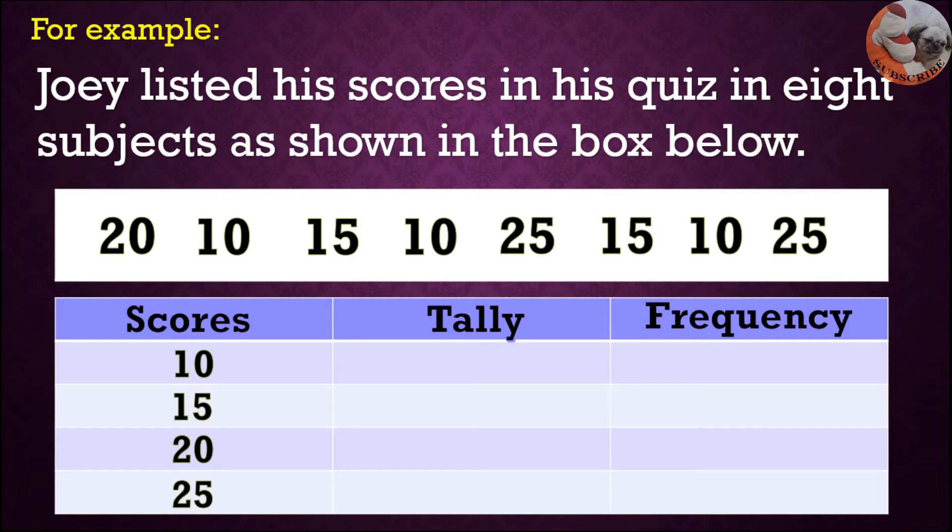Then count how many tens are there. 1, 2, 3. You tally it as 3, and the frequency is 3. Then count 15, there are 2, so the frequency is 2. Then count 20, there's only 1, the frequency is 1. Then count 25, 1, 2. You tally it as 2, and the frequency is 2.